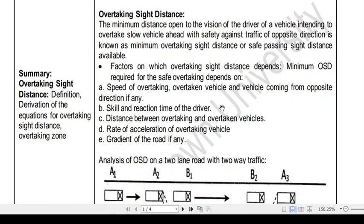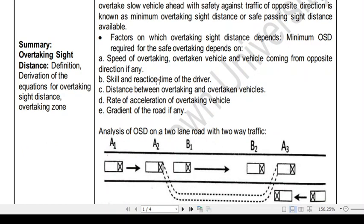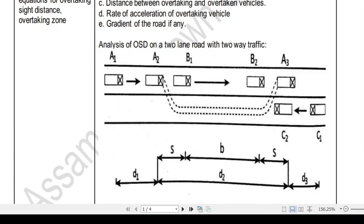Other factors include the distance between the overtaking vehicle and the vehicle being overtaken, the rate of acceleration of the overtaking vehicle, and the gradient of the road — meaning whether there are any uphills or downhills.